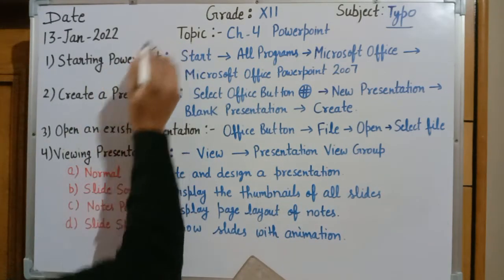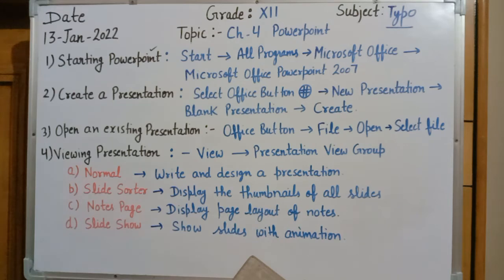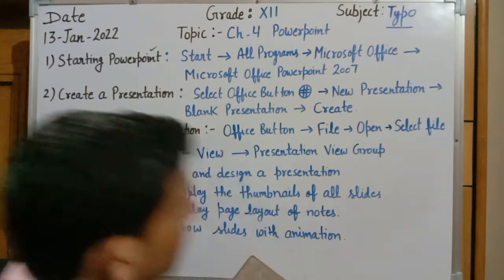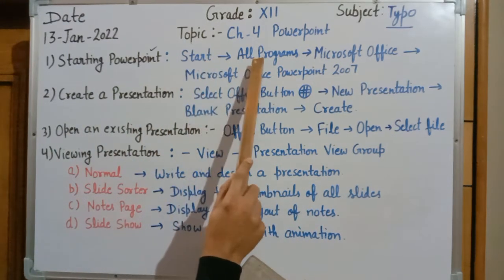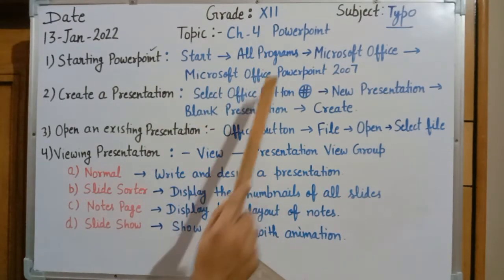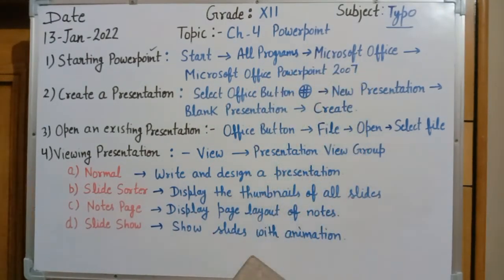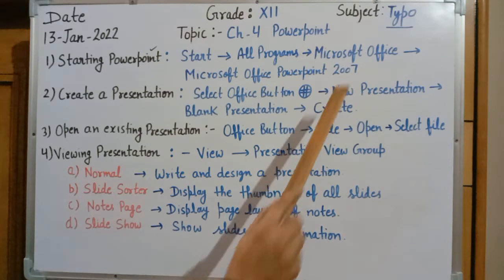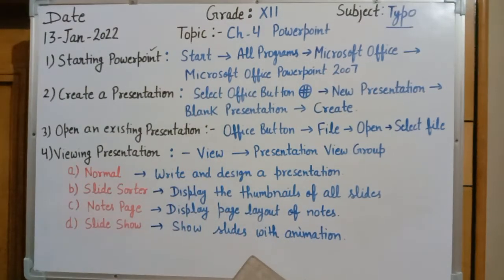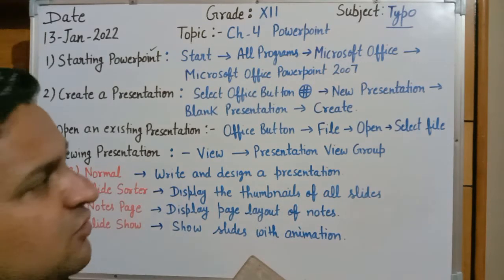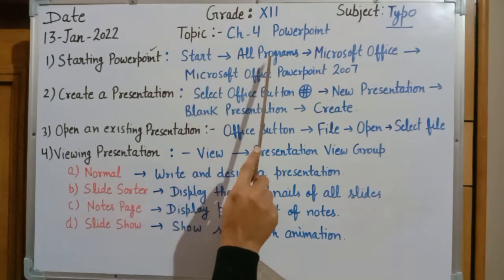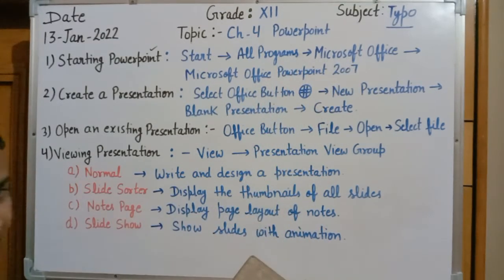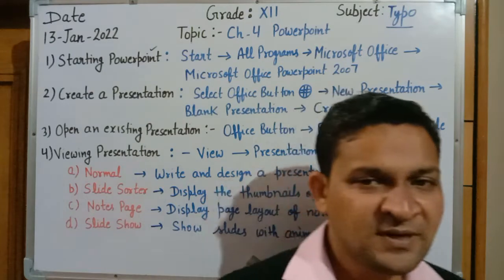To start the PowerPoint presentation, follow these basic steps. Step one: click on the Start button. Step two: select All Programs. Step three: select Microsoft Office. Step four: select Microsoft Office PowerPoint 2007. After following these four steps, a screen will appear on your desktop.